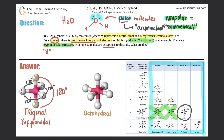So the first exception is linear in the trigonal bipyramidal electron geometry. An example would be XeF2⁻, which has one central Xe atom, two F atoms bonded to it, and three lone pairs — totaling eight electrons around the center.